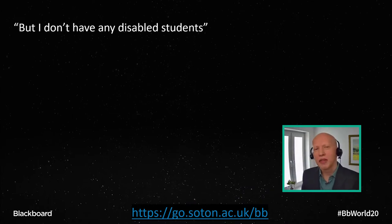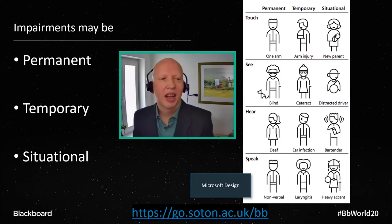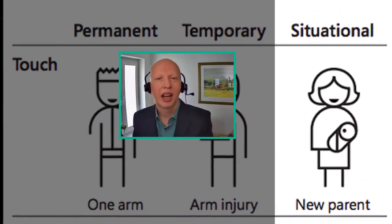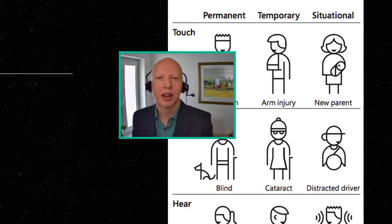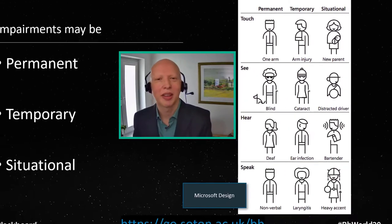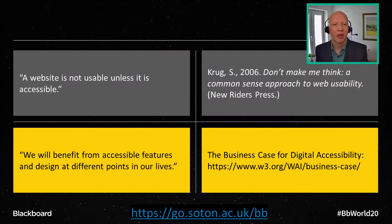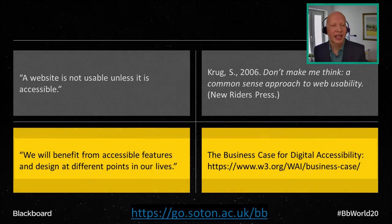You might also think you don't have any disabled students, but impairments may not only be permanent — we also have temporary and situational impairments. This graphic from Microsoft Design shows that well. If you look at the new parent scenario, many of you during lockdown may have been trying to work on the computer with one hand while dealing with a child, a pet, or a partner with the other. A website isn't usable unless it is accessible, and we'll all benefit from accessible features at different points in our lives.